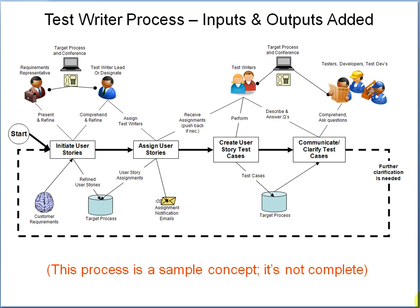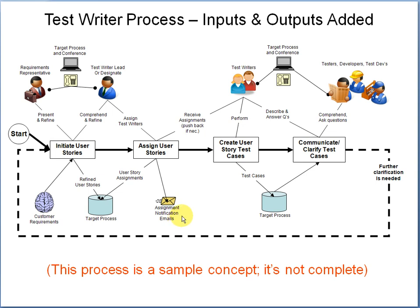Here we have the final layer, and we also see some inputs and outputs at the bottom area. In this case, it's a picture of a brain, so customer requirements coming from the mind of the customer — could be documentation too, this is just an example. An arrow pointing into the activity shows it's an input, and an arrow coming out is an output. In this case it's showing the sink — the location where that output is going to be stored — and it labels the output as 'refined user stories.' We also have an example of a notification email as an output: the test writer lead assigns test writers, and the output is an email notification letting the test writer know they have that particular assignment.